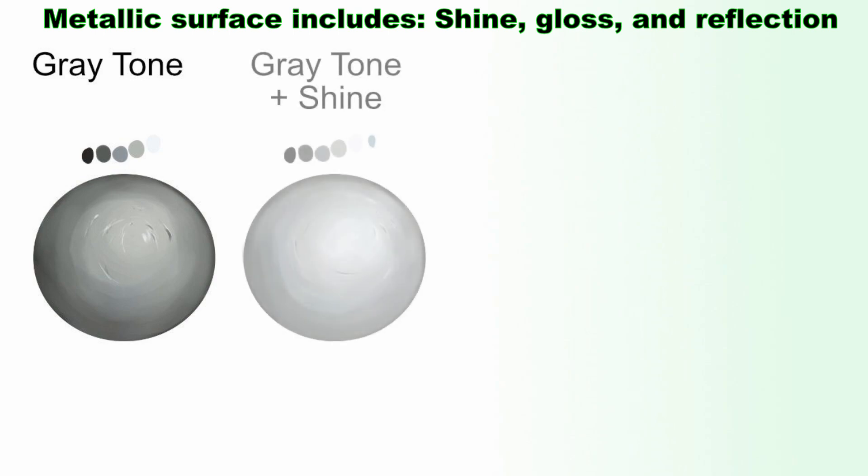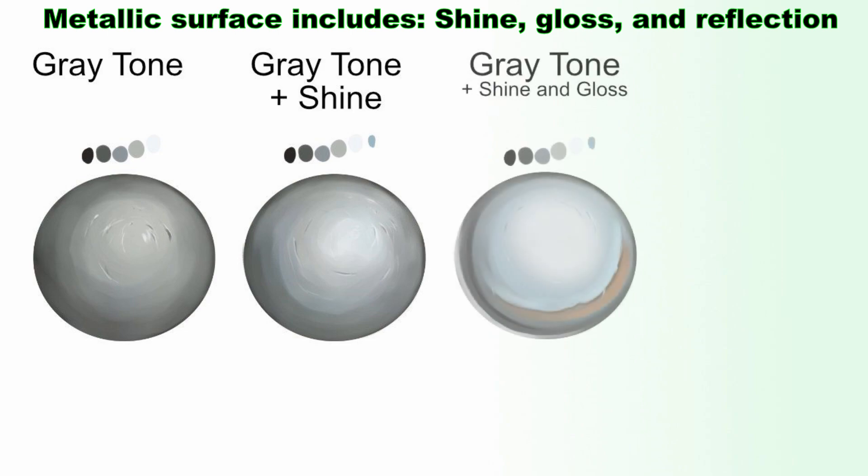What are we going to cover here? Distinguishing gray tone from metallic tone surface. To achieve a metallic surface, you'll need shine, gloss, and reflection.